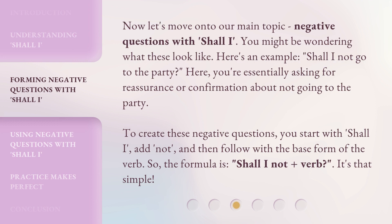Now, let's move on to our main topic: negative questions with 'shall I'. You might be wondering what these look like. Here's an example: 'Shall I not go to the party?' Here, you're essentially asking for reassurance or confirmation about not going to the party. To create these negative questions, you start with 'shall I', add 'not', and then follow with the base form of the verb. So the formula is: shall I not + verb? It's that simple.